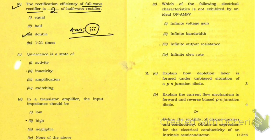The next question is: in a transistor amplifier, the input impedance should be high. Which of the following electrical characteristics is not exhibited by an op-amp? The answer is infinite output resistance. Now let me give you the answer to question number 2a.